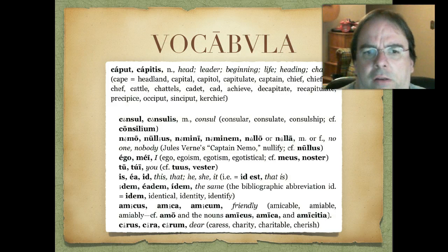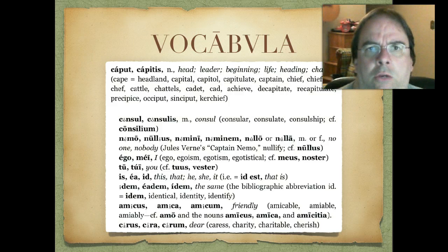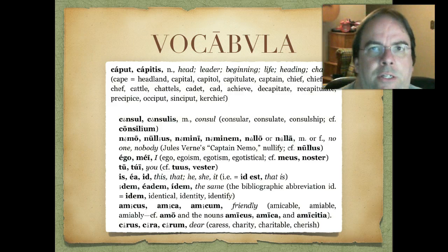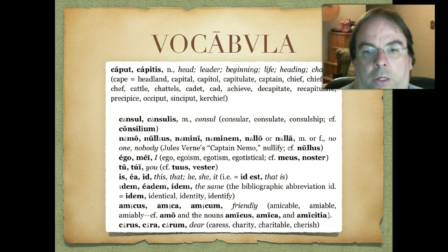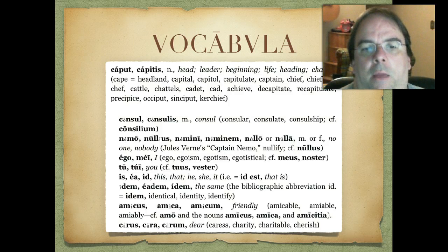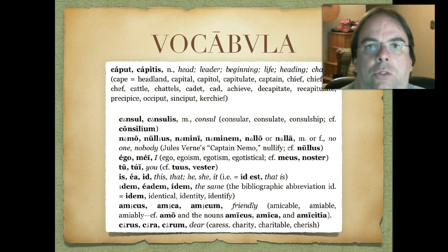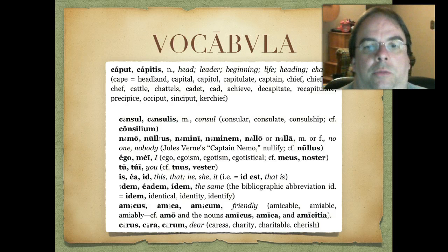Here we're going to have some vocabulary that looks pretty familiar. We've seen amicus as a noun, but now it's an adjective: amicus, amica, amicum. In this case, if it modifies a noun, it doesn't just mean friend — it means friendly. So if somebody's amicable, they're friendly. Same thing with the next one: carus, cara, carum — means dear, something you hold dear, something you cherish.